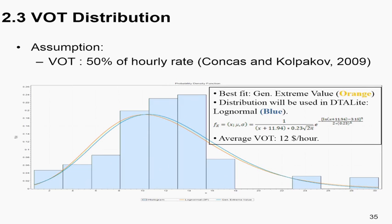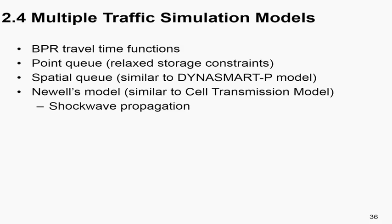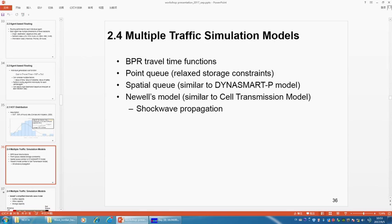By doing so, we can enable different value of time applications and consider high income and low income groups, and to consider the effect of toll facilities on behavior change across different VOT distributions. In the United States, twelve to fourteen dollars per hour is a typical value of time for travel applications. Typically, value of time can be viewed as fifty percent of the hourly wage rate. So even using twelve dollars as the value of time, this represents approximately twenty-two dollars hourly rate for the overall population.